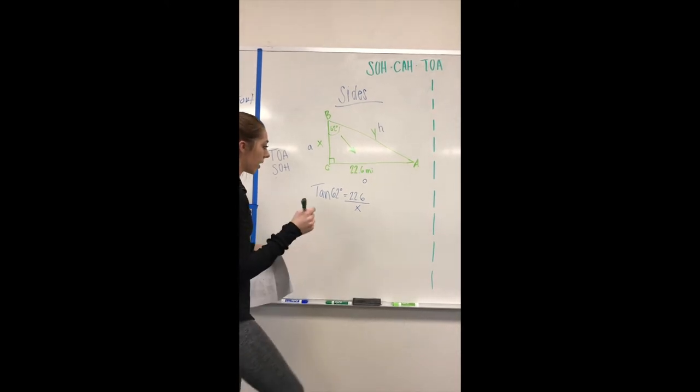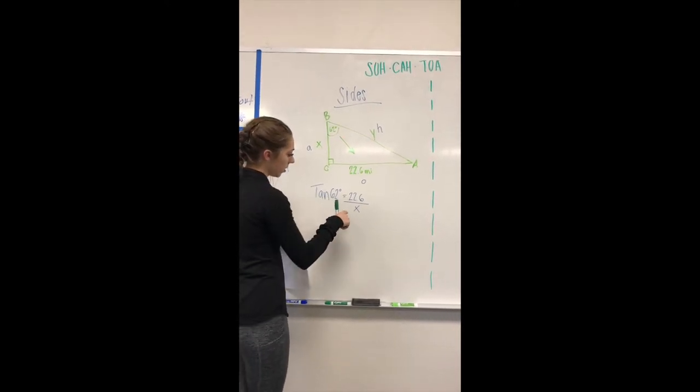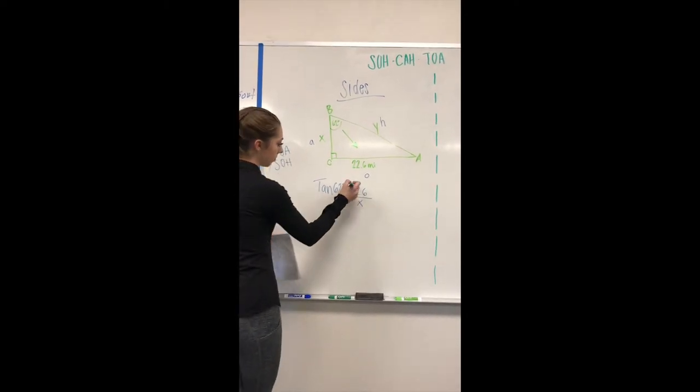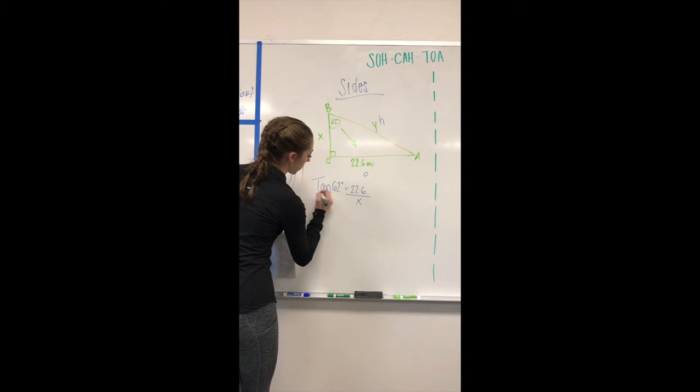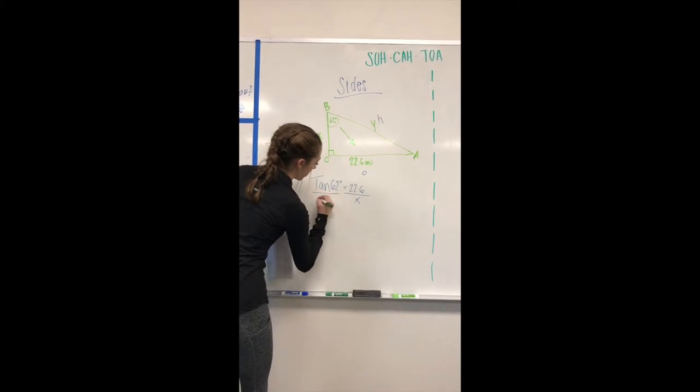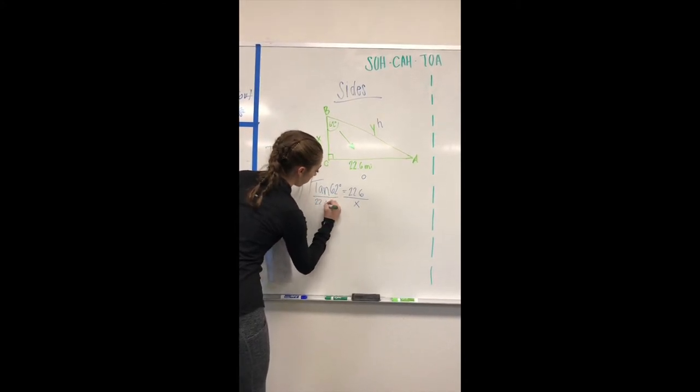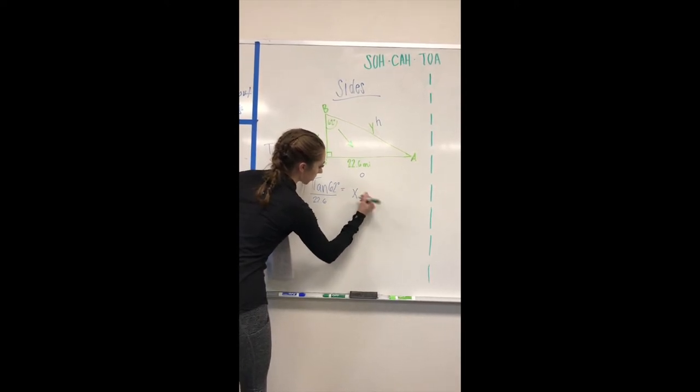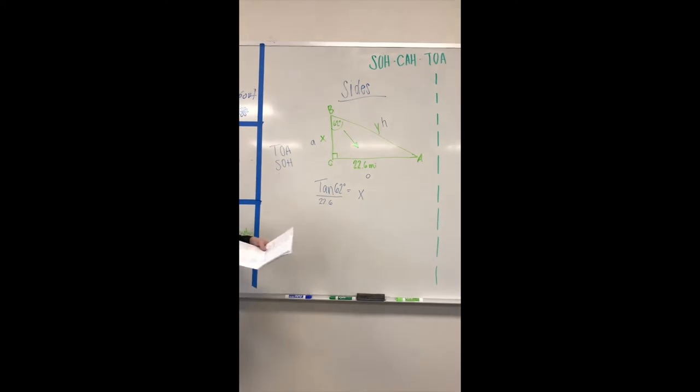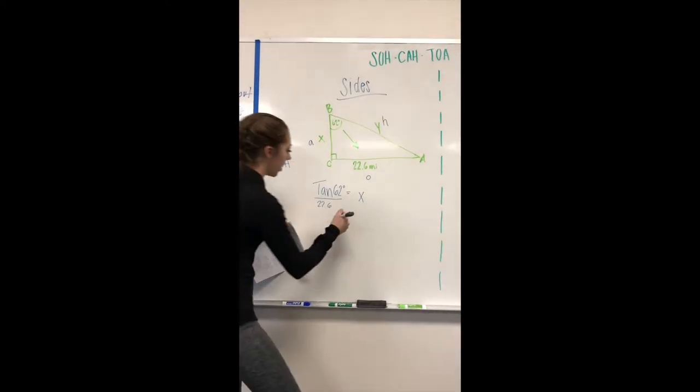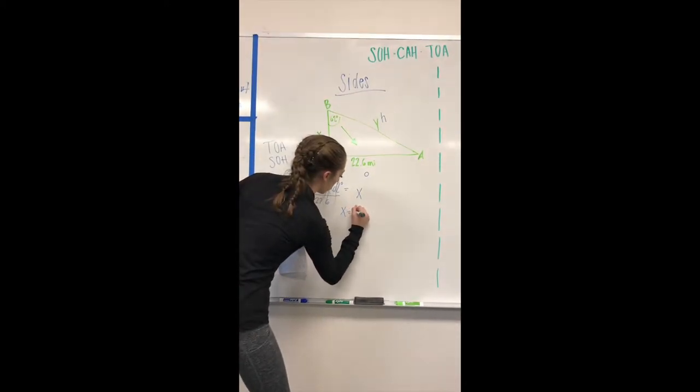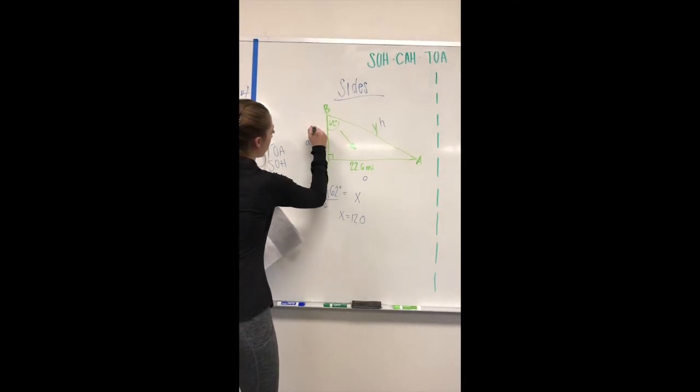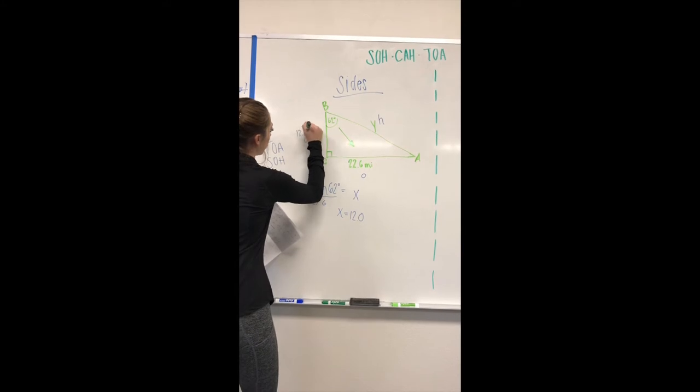To solve it, you'll put it in your calculator making sure that x is on top. You'll divide, so this comes over here and this ends up as 22.6. Then you erase all of this on this side and this becomes x. Your answer would be x equals 12.0.